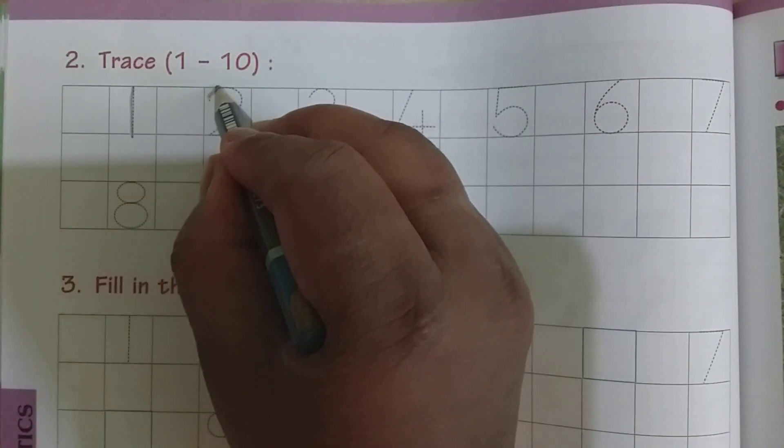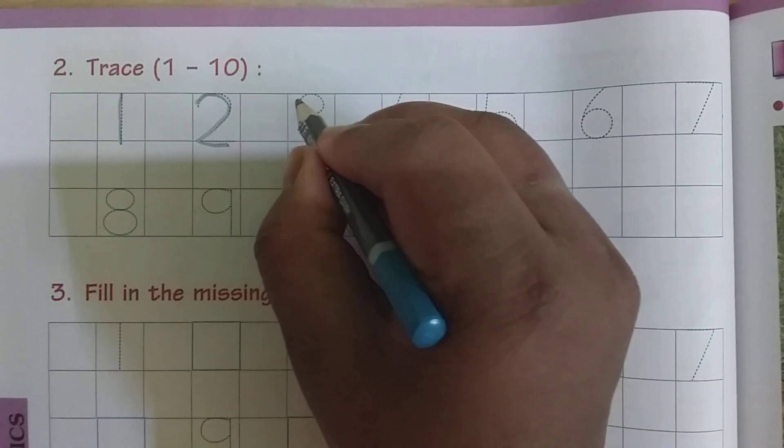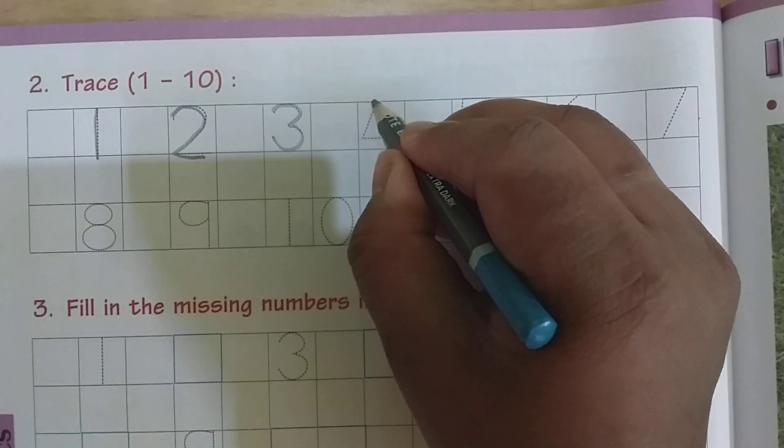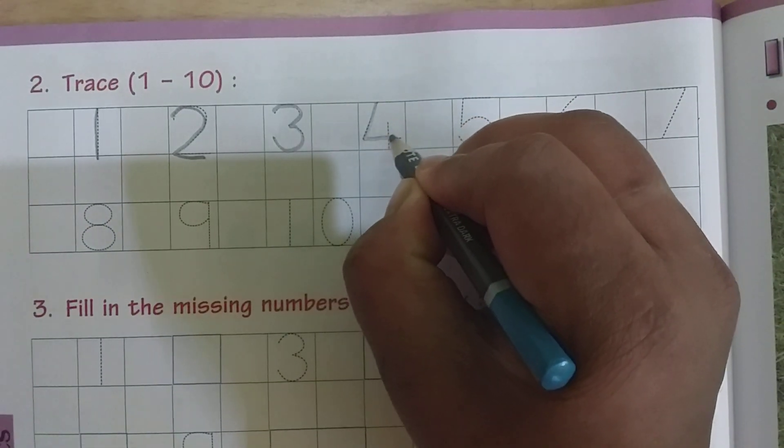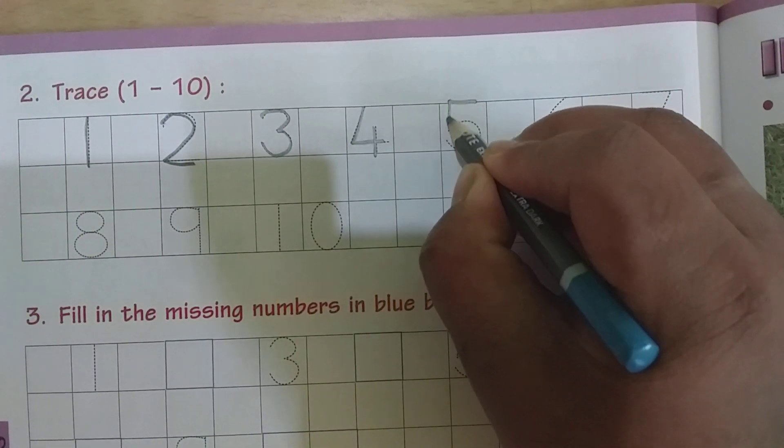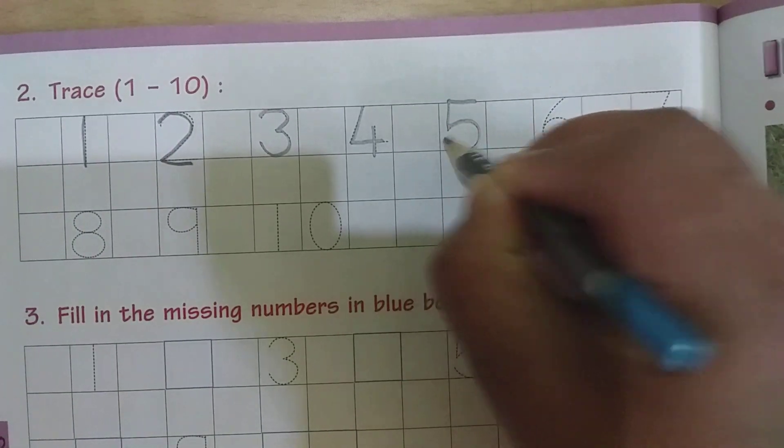See, 1, 2, 3, 4. See how I am drawing on the dotted lines. You should also write like this only.